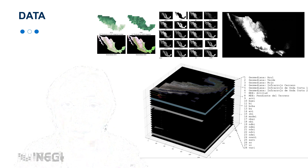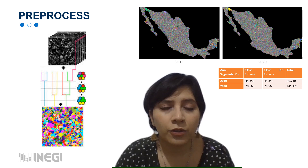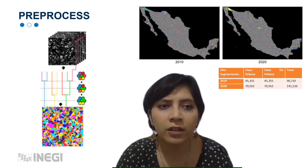Regarding field data, for 2010 we used the urban polygon layer of the 2010 geostatistical framework. For 2020, we used the layer of urban and rural localities that show city blocks. To generate tests and training sets, all labeled polygons where the proportion of labeled pixels was high enough were selected.